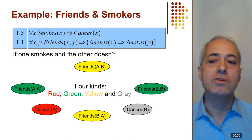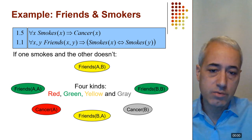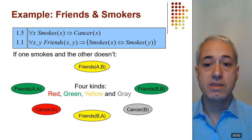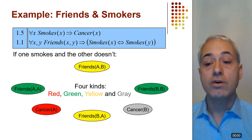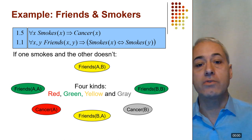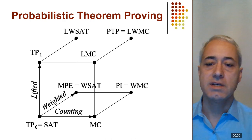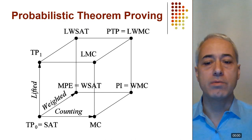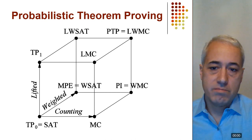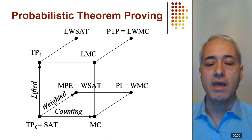If Anna smokes and Bob doesn't, we get four kinds of worlds, and things don't simplify as much. In practice, you're usually somewhere between these two limits. In the best case, the cost of inference is of the order of the size of the Markov logic network itself — much smaller than the full ground network. In the worst case, it's still exponential, but on average significant savings are achieved.